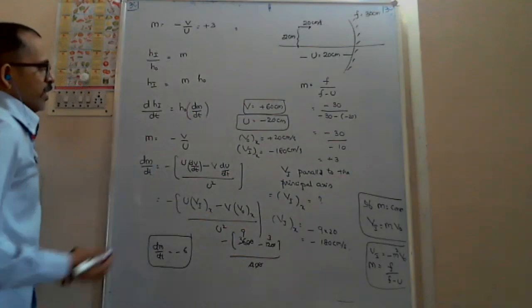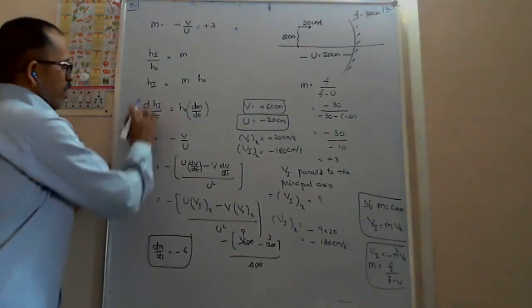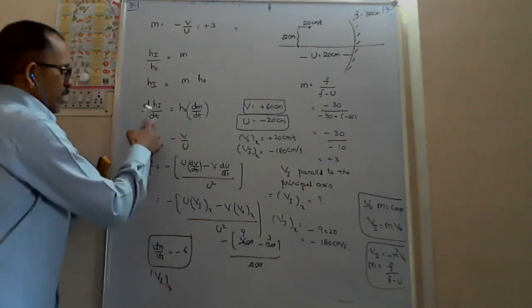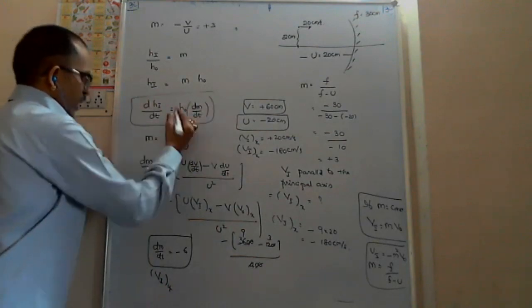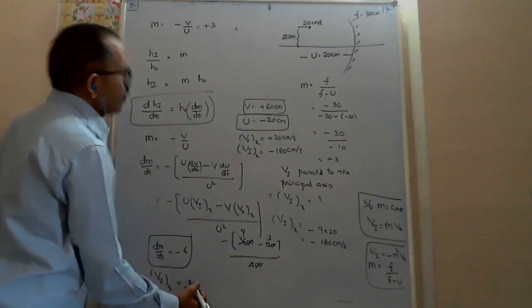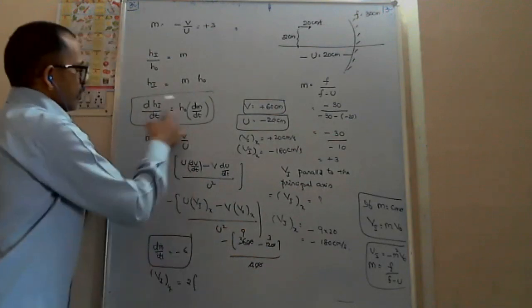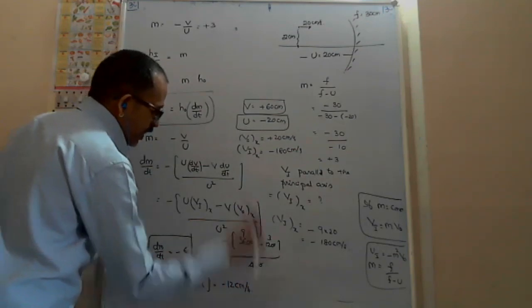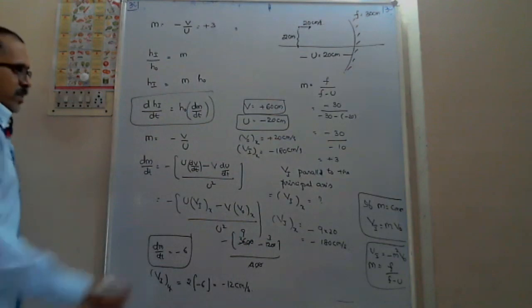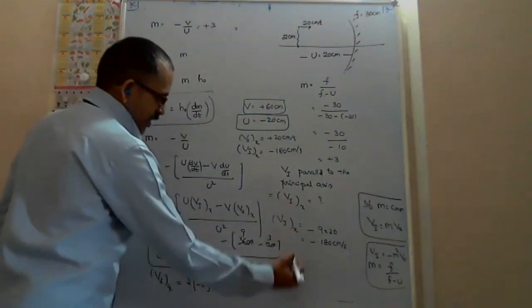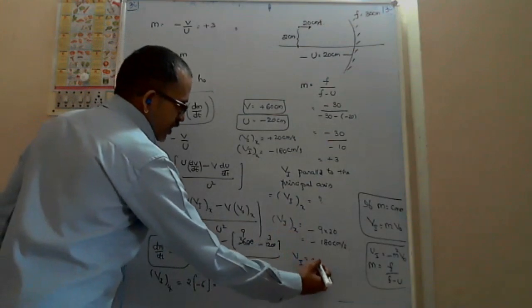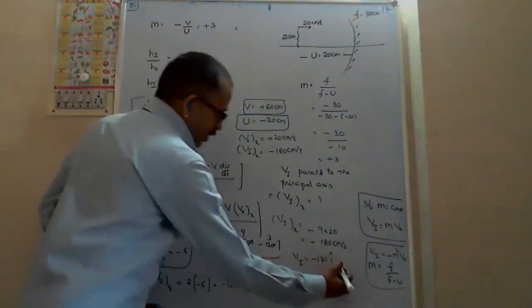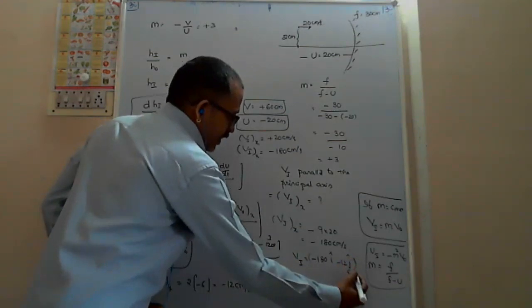Substituting into the formula: velocity of image along y-axis equals m × v_object_y plus H_o × dm/dt. With h_o equals 2 centimeters and dm/dt equals minus 6: velocity of image along y-axis equals 3 × (some component) plus 2 × (minus 6) equals minus 12 centimeters per second. So finally, velocity of image equals minus 180 î plus minus 12 ĵ centimeters per second.